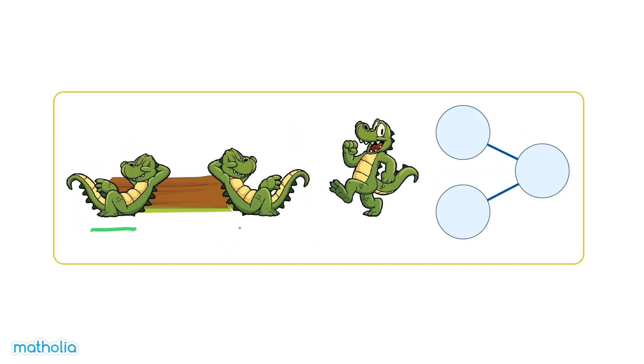Two alligators are taking a nap. One alligator is coming to join them. Two and one make three. There are three alligators in all. See you later, alligators.